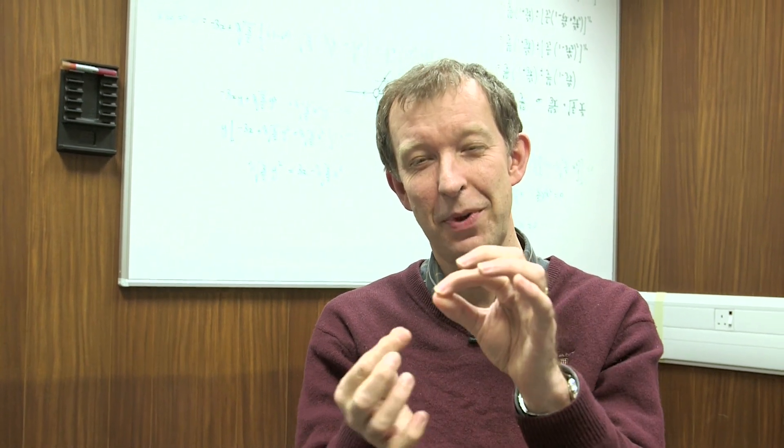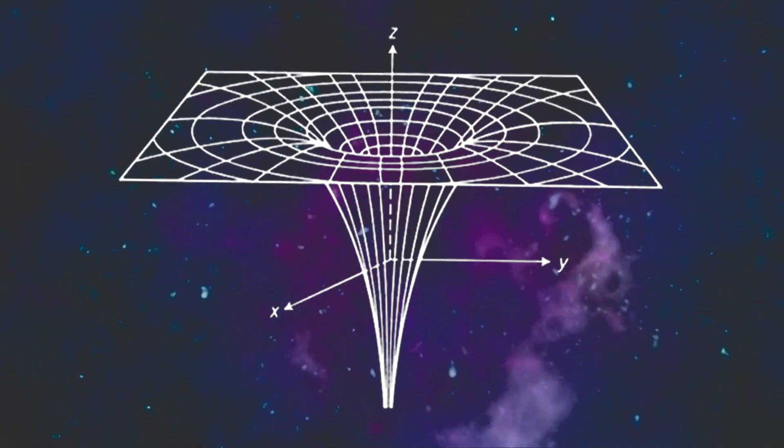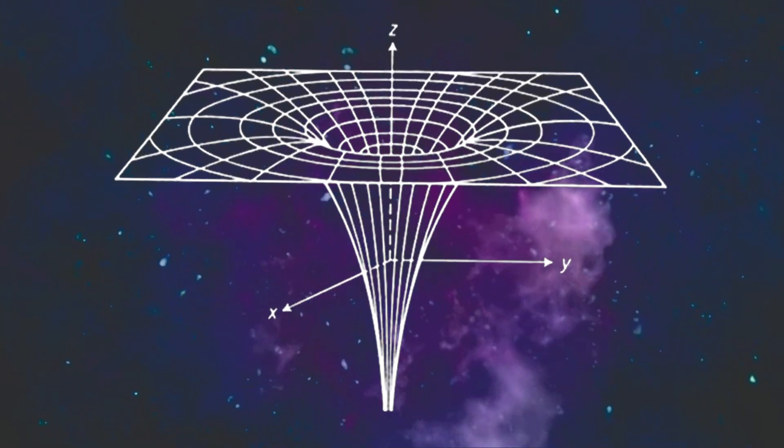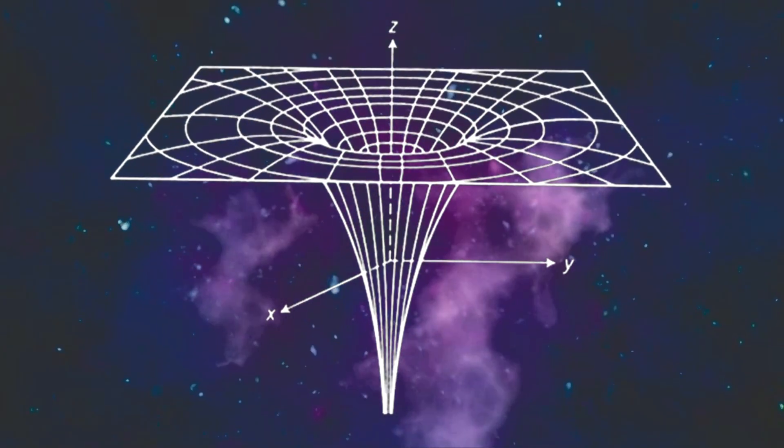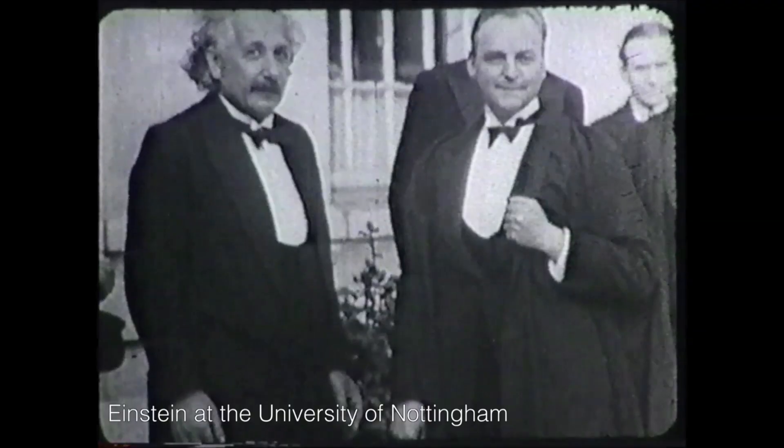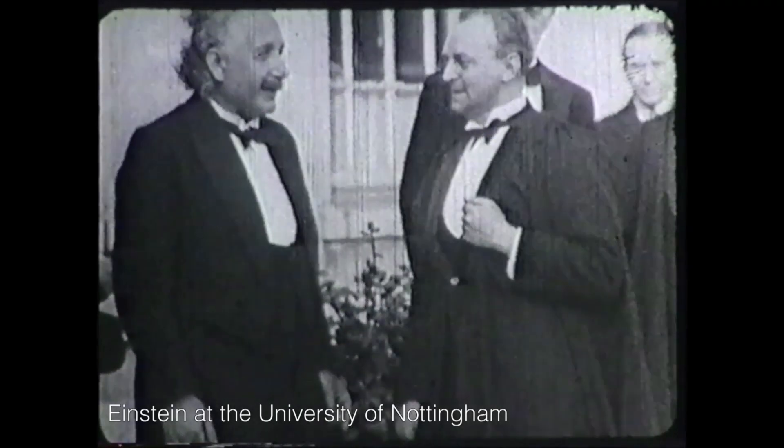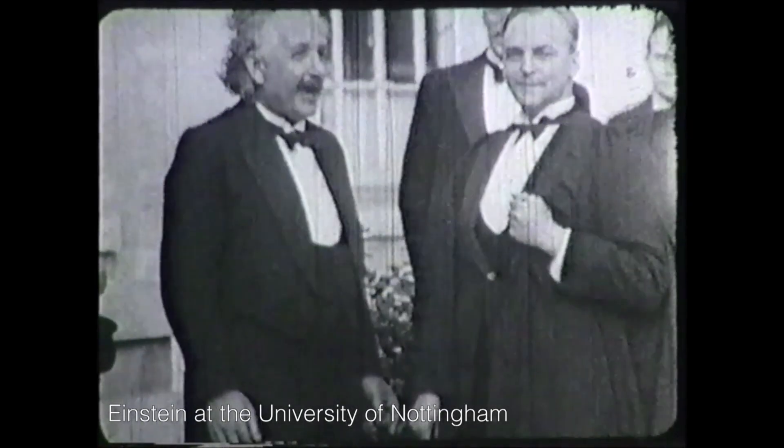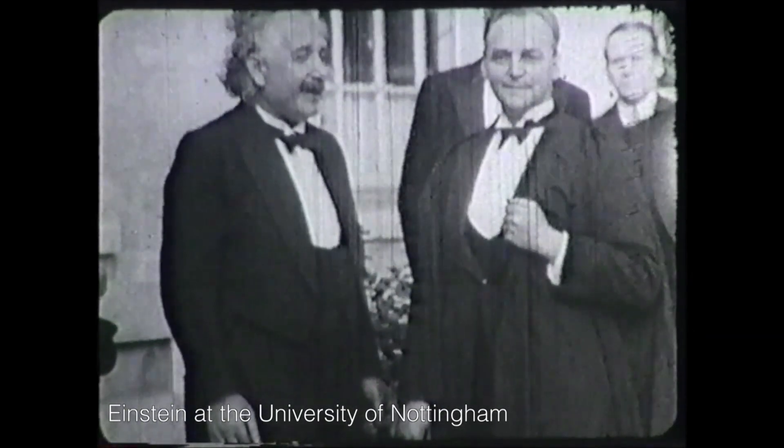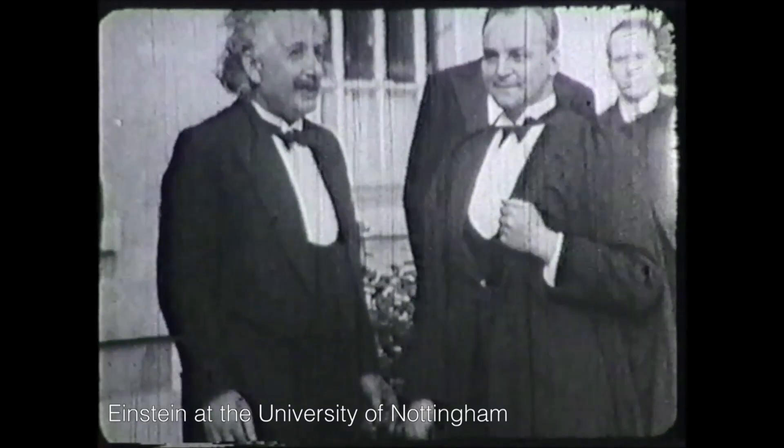Density is mass per unit volume. Well, if it's got no volume, it's an infinite density. These black holes that are defined are defined in the sense of using general relativity, and this is this wonderful theory of Einstein which explains how matter and curvature of the space-time are intricately linked together.